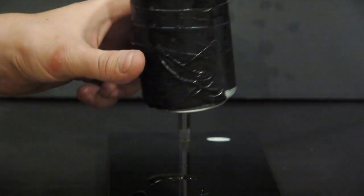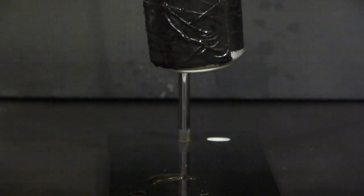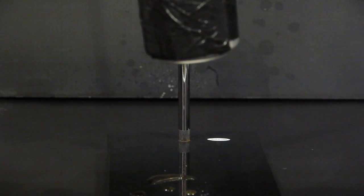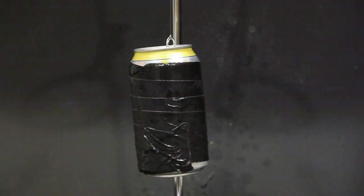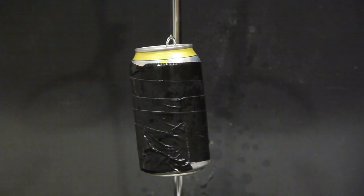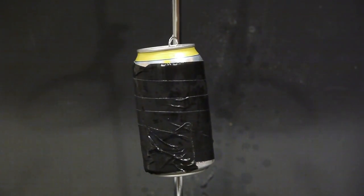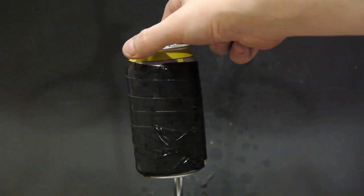Once you have the holes done, take some fishing line or string, whatever you have that will support a can that's full of soda, and then tie it around the tab, which you need to bend up. Here we go. It's hanging nice and free.